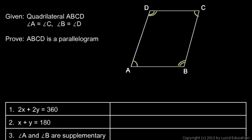Instead of simply marking these angles — and marking them is fine — I'm going to give them variable names that will be useful in the proof. Angle A I'm going to call x degrees, and angle C also has to be x degrees because A and C are equal. Angles B and D are the same; I'm going to call them y degrees.